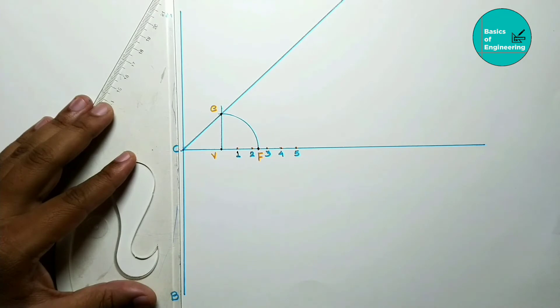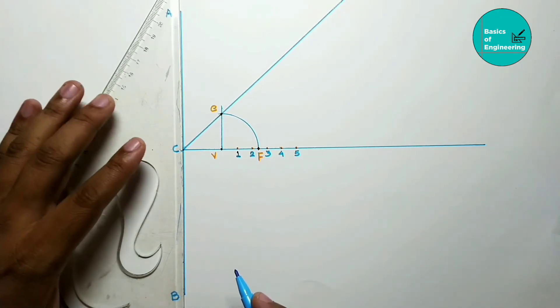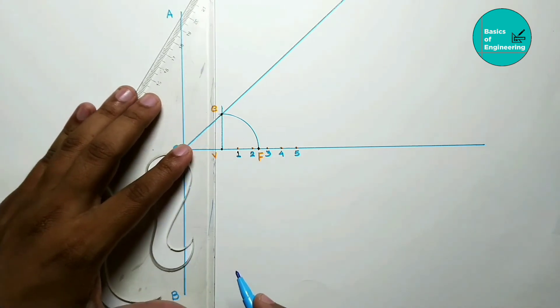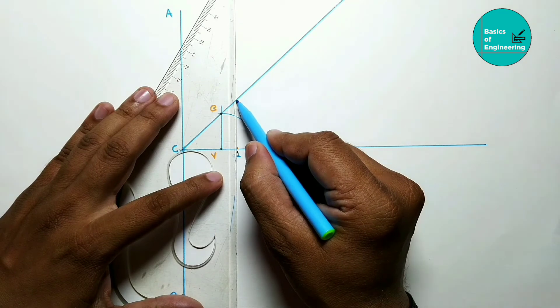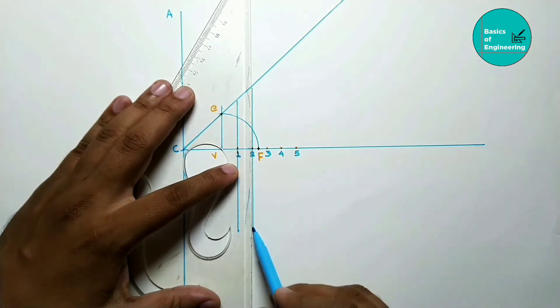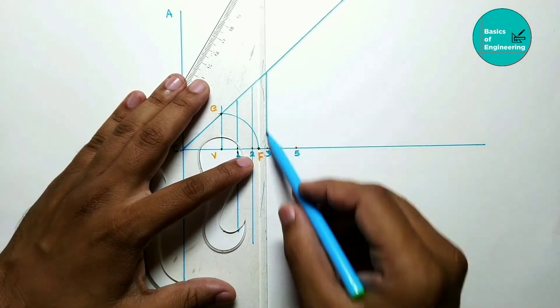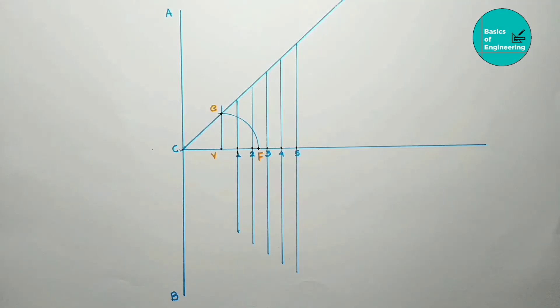From each point, draw a vertical line which is parallel to directrix. So vertical line number 1, line number 2, line number 3, line number 4, and line number 5. Five to six parts are enough for parabola.